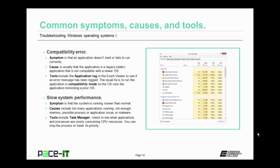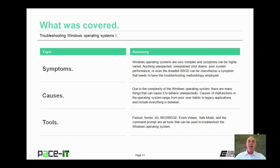A commonly occurring symptom is slow system performance — the system is running slower than normal. Causes include too many applications running, not enough memory, a process or application issue, or malware — all of which can consume CPU and operating system resources. Tools to troubleshoot and resolve this include Task Manager. Check to see what applications and processes are overly consuming CPU resources. You can also stop the process or lower its priority from there.